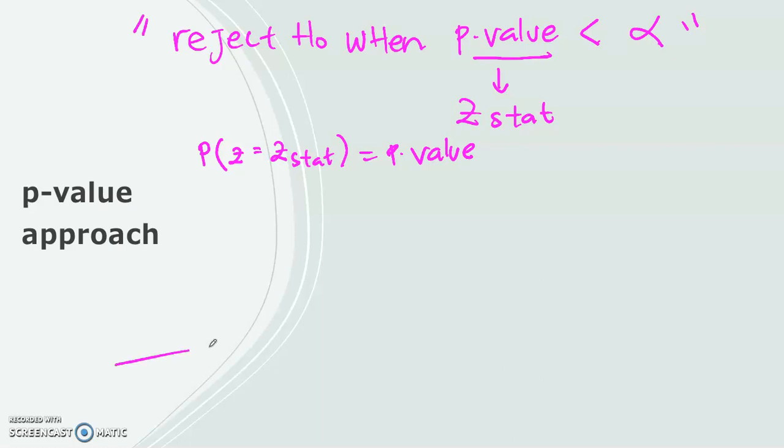Now let me tell you the logic why the rejection rule is as such. If you draw the normal probability distribution, remember, from the critical value approach, you reject H0. Let's say it's a left side, left tail test. This is the rejection area and this is the z-critical. You reject H0 if the z-statistic falls in the rejection area.